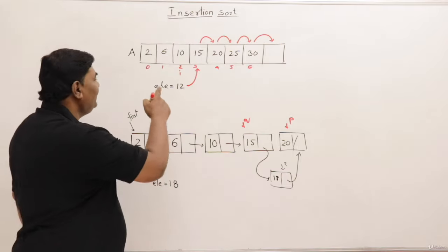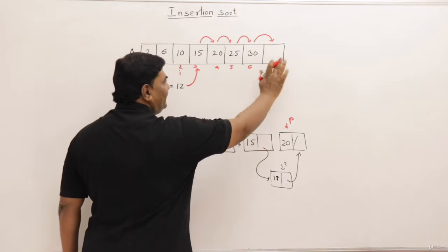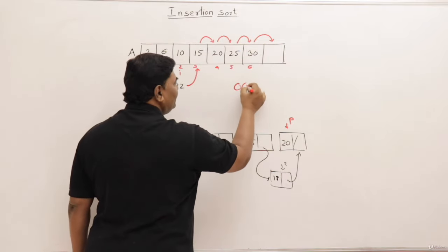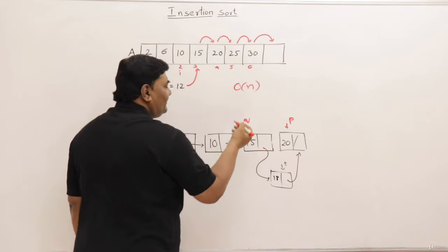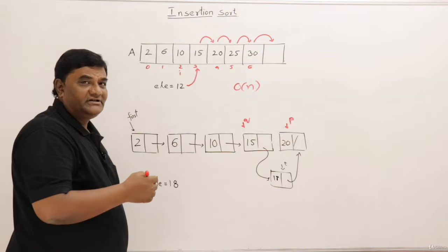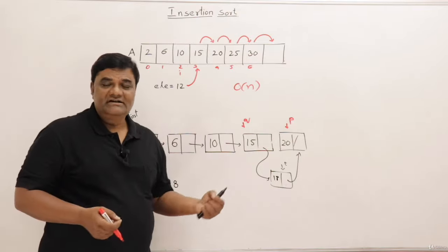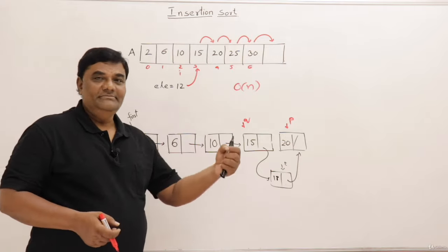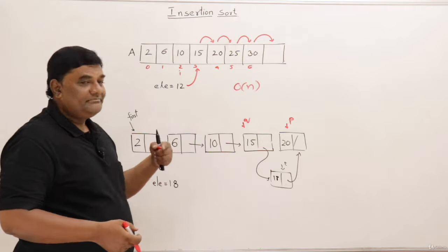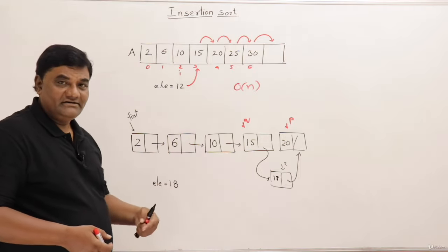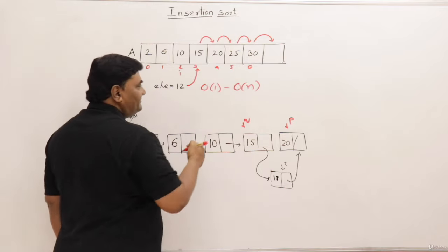So what is the time taken for insertion in an array? Shifting of elements. How many elements? Some elements are shifted. So n depends on the number of elements. Maybe 0 elements are shifted. Maybe all elements are shifted. So it may be minimum constant, maximum n. Minimum constant and maximum n.